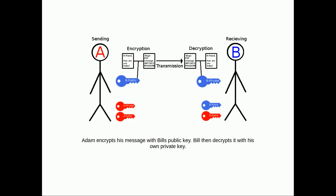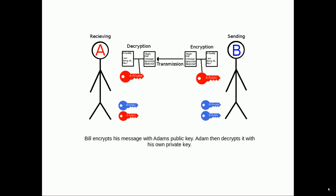Here we see an example of a message being sent: Adam encrypts his message to Bill with Bill's public key. Bill then decrypts it with his own private key. Bill is the only person with his private key, so he's the only person who can read it. Conversely, if Bill wants to send a message to Adam, he gets Adam's public key and encrypts the message with it. Adam then decrypts it with his own private key. Note: I won't be covering session keys here — you really don't need to know about them in order to use GPG.